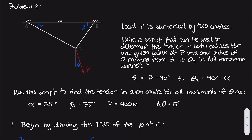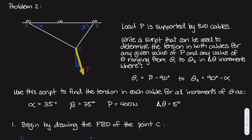Load P is generally acting downwards and making an angle from the vertical called theta. If theta is positive, load P is acting to the right of that vertical; if it's negative, it's acting to the left. Theta has constraints — it is locked into a range from theta one, the starting theta, up until theta two, the ending theta.